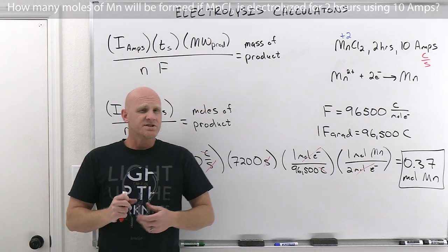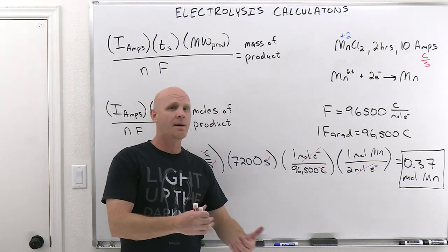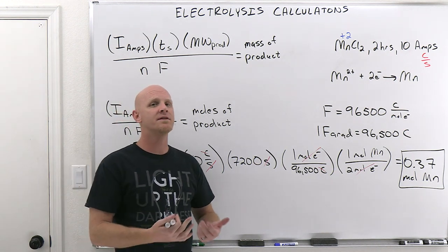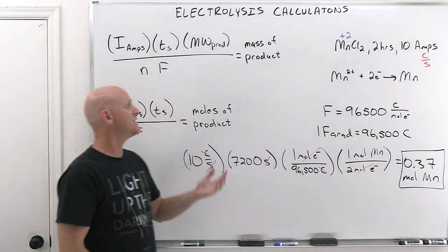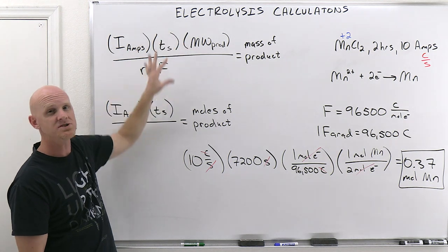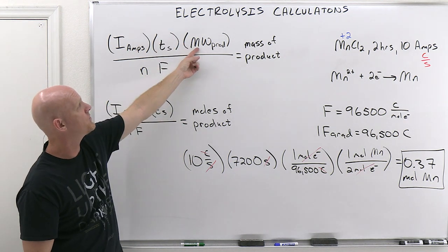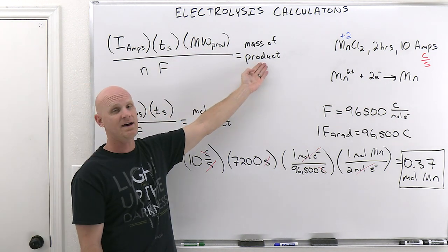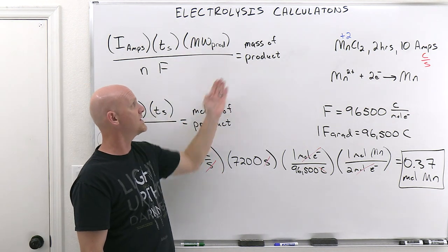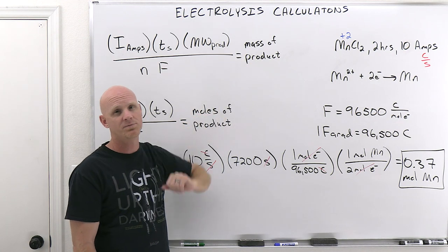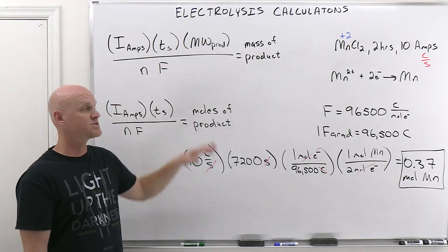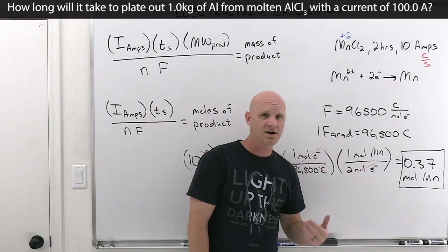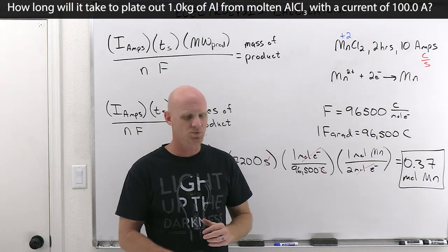If the question asked for grams of manganese instead of moles, you simply multiply by the molar mass. That's the only difference between the two equations: the top equation gives you grams of product by multiplying by the molecular weight of the product. If we wanted grams here, we'd multiply by the molecular weight of manganese from the periodic table.